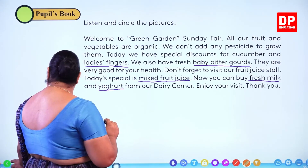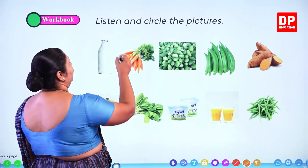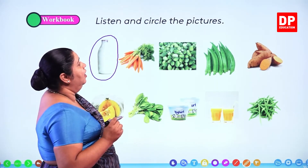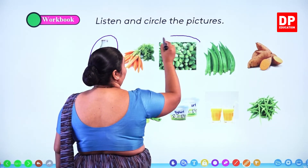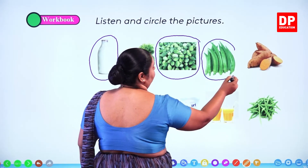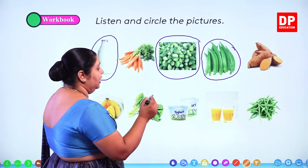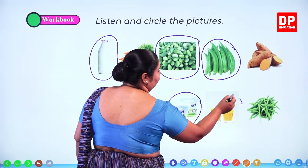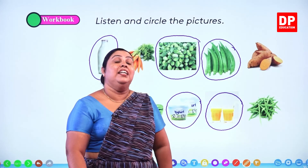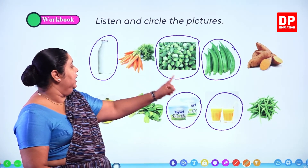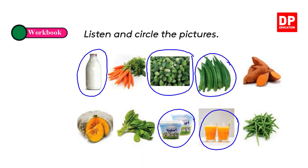Welcome to Green Garden Sunday Fair. All our fruit and vegetables are organic. We don't add any pesticide to grow them. Today we have special discounts for cucumber and lady's fingers. We also have fresh baby bitter gourd. They are very good for your health. Don't forget to visit our fruit juice stall. Today's special is mixed fruit juice. You can buy fresh milk and yogurt from our dairy corner. Enjoy your visit. Did we hear the word milk? Yes, we did — so you have to circle it. The baby bitter gourd, the lady's fingers, the fresh juice, and the yogurt are the items to circle.